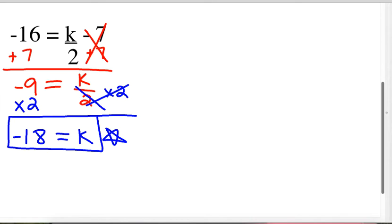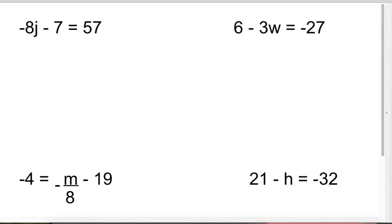Want to do some more? Well, it's your lucky day. I have 4 more that we're going to do. Okay, let's go. Look at j. Negative 8j minus 7 equals 57. Ready? Who goes first? The 7. And the opposite is add 7. There's that. There's this. And 57 plus 7 is that. That's step 1.